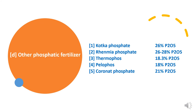The fourth category includes other Phosphatic fertilizers used on a specific condition basis. Examples are Kotka Phosphate with 26% P2O5, Remia Phosphate with 26–28% Phosphorus, Thermophosph with 18.3% Phosphorus, Pelophosph with 18% Phosphorus, and Coronate Phosphate which contains 21% Phosphorus as P2O5.